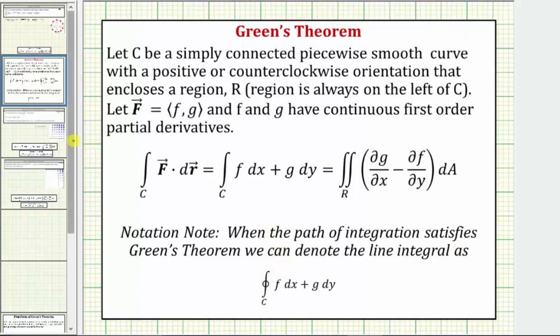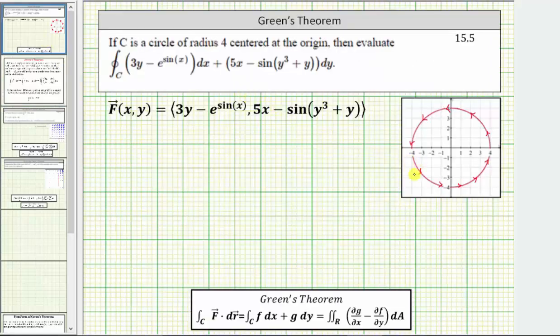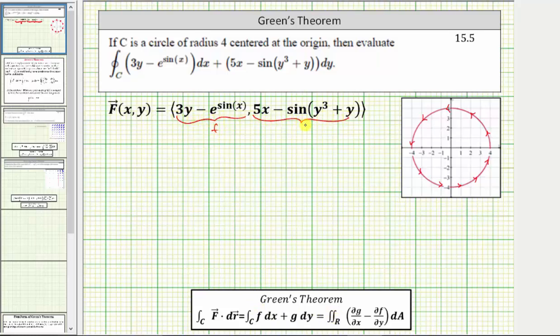So going back to our example, we know the curve C has a positive orientation. Looking at the differential form of the line integral, we know the vector field has an x component of 3y minus e raised to the power of sine x, and the y component is 5x minus sine of the quantity y cubed plus y. Which means for the formula shown below for Green's theorem, little f is the x component and little g is the y component.